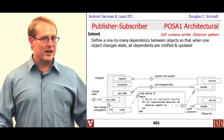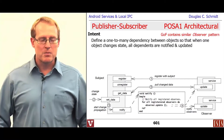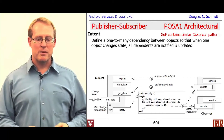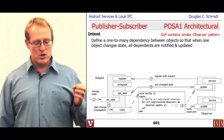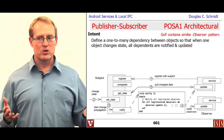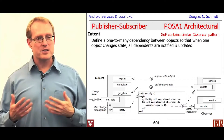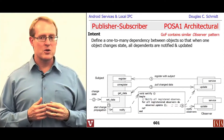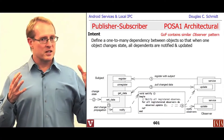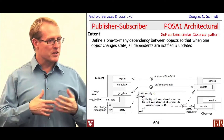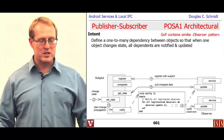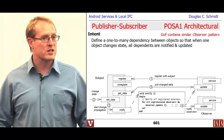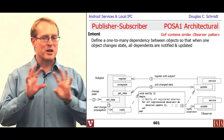There's also a Gang of Four pattern that's very similar, although not identical, to publisher-subscriber — that's the observer pattern. The intent of the observer pattern is to define a one-to-many dependency between objects so that when one object changes state, all dependents are notified and updated. The observer pattern is very commonly used within a single address space, while publisher-subscriber is typically used more when going across address spaces, though that distinction is somewhat artificial.